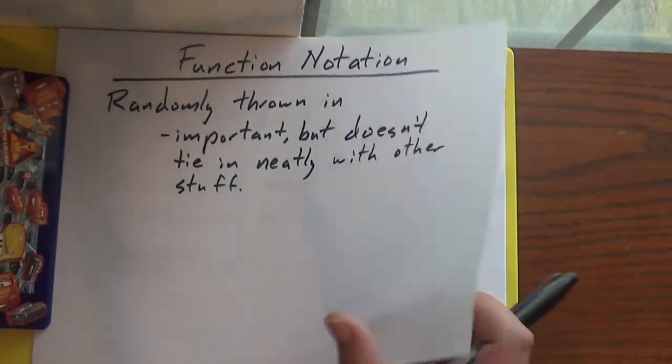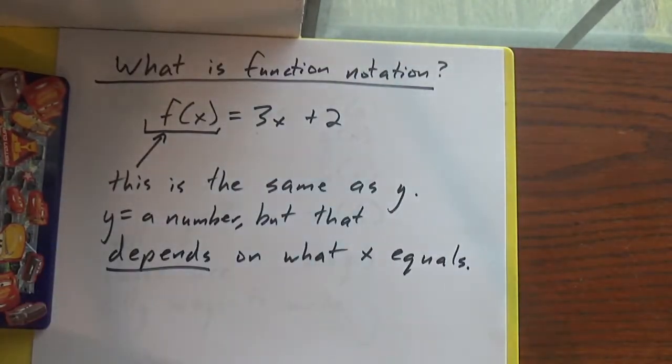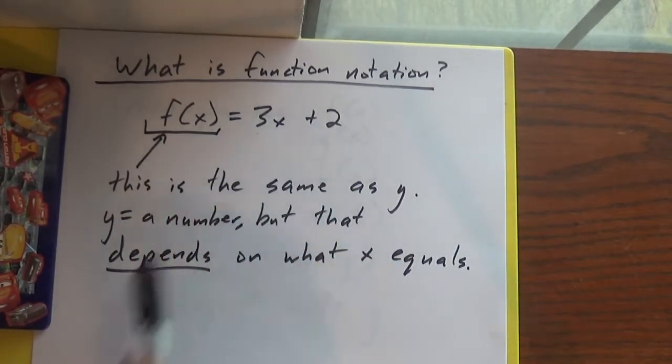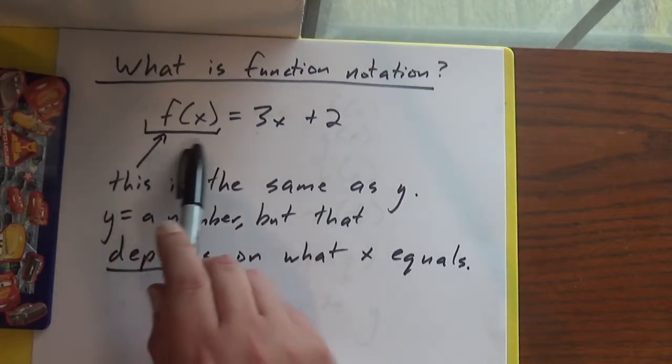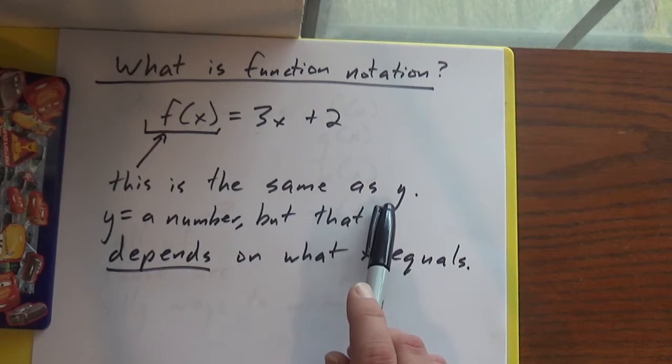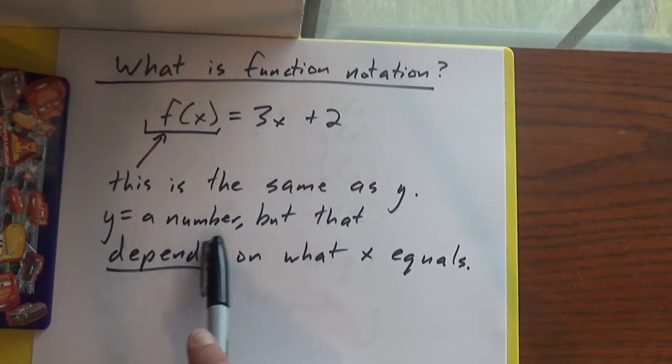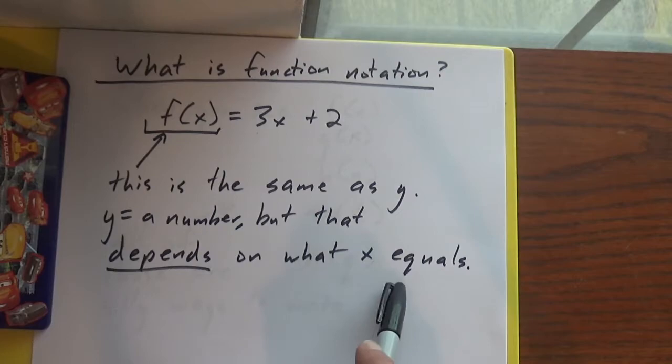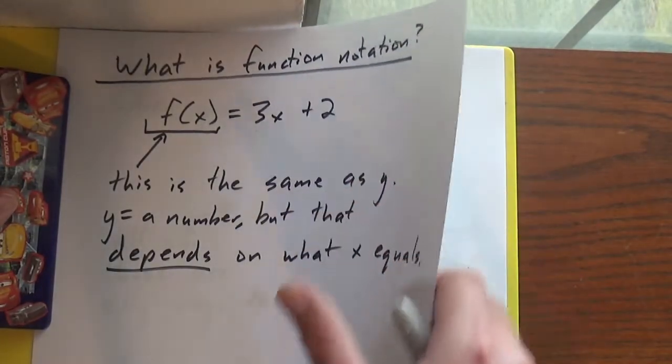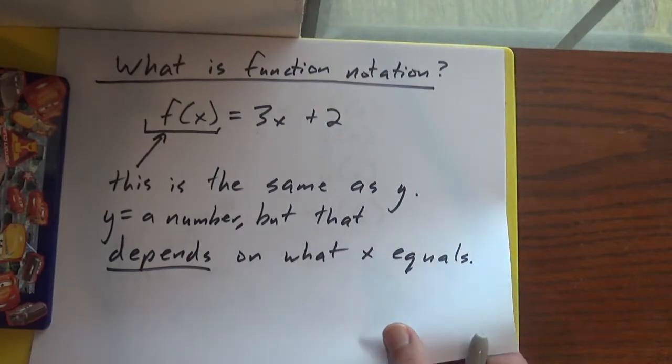I could have thrown it in with domain and range but those are confusing enough already. All right, we'll start with what is function notation. Function notation means you're going to see f(x) equals a bunch of junk. Now this f(x) part looks weird. It's the same thing as y. So y is a number, but that number depends on what x equals. So that means y is a function of what x is. It depends on what x is.